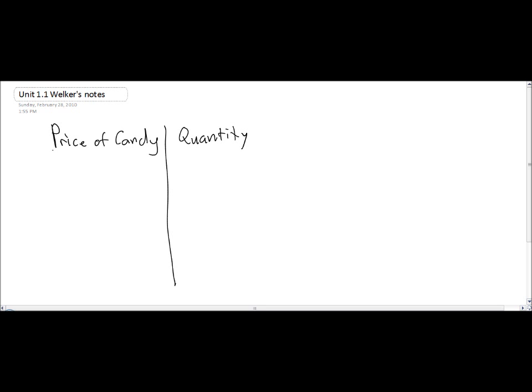For our first video tutorial, we're going to do a little lesson on the difference between individual demand and market demand. We're going to define the law of demand. When we're talking about demand, the first thing we need to realize is that we're comparing the price of a product - the product we're going to talk about is candy - to the quantity demanded for candy.